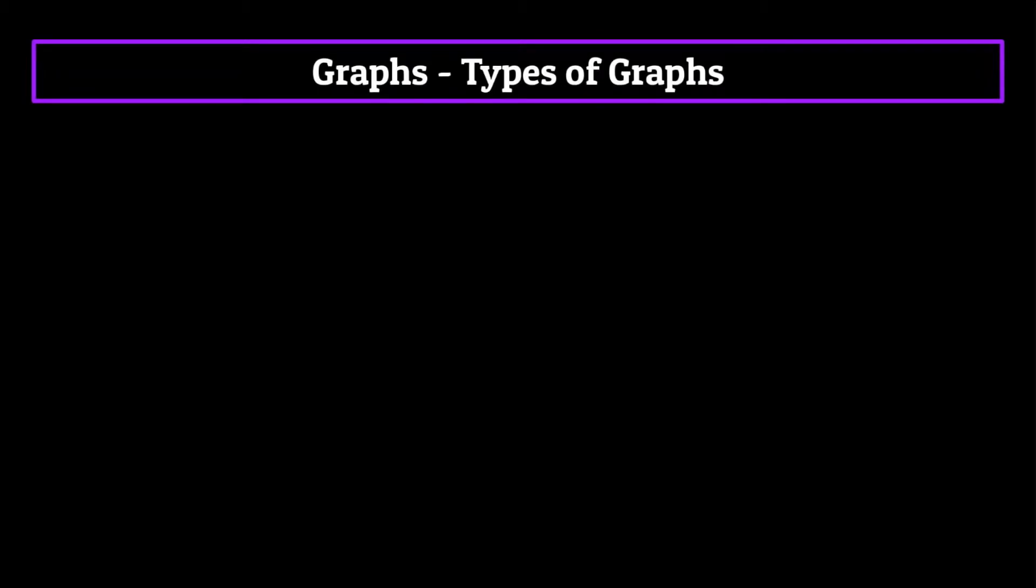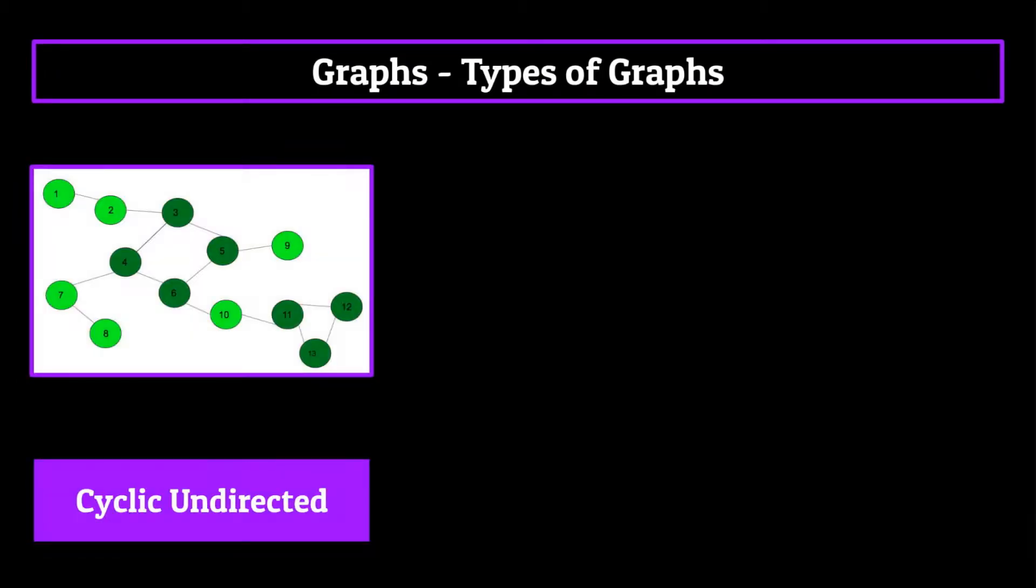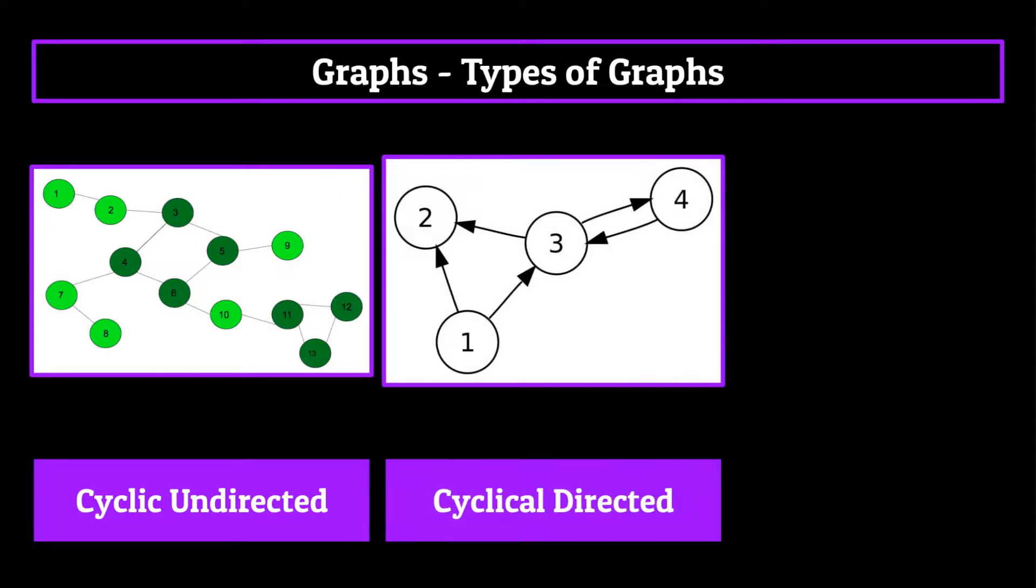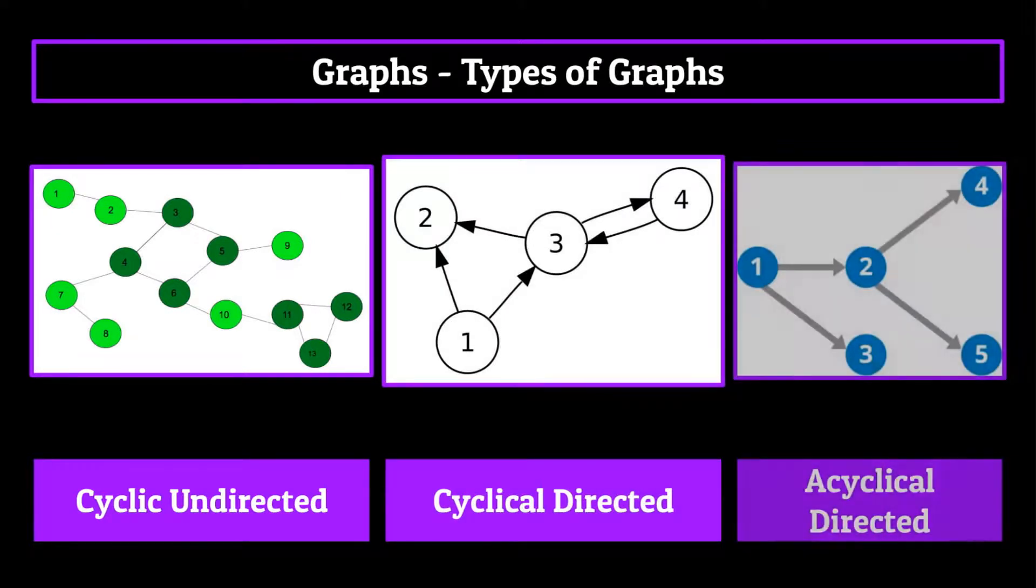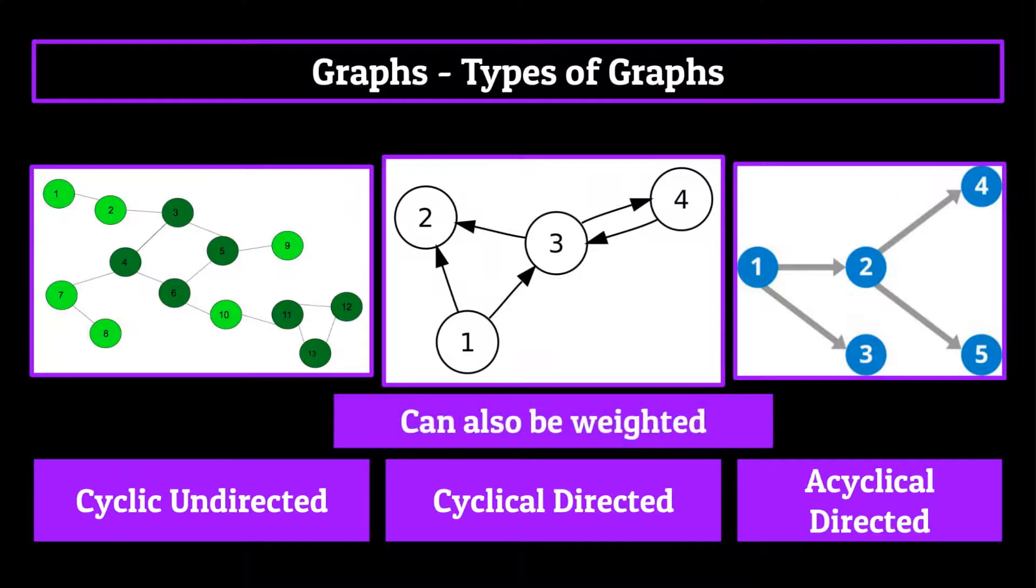Combining them leaves us with the following: acyclic undirected graph, cyclic directed graph, and an acyclic directed graph. And then of course, all of these could also have weights added to their edges for added functionality, leaving us with six different types of graphs. It would take a while to talk about each of these and their implementations. So I'll just pick out three that have the most common or popular uses in computer science.